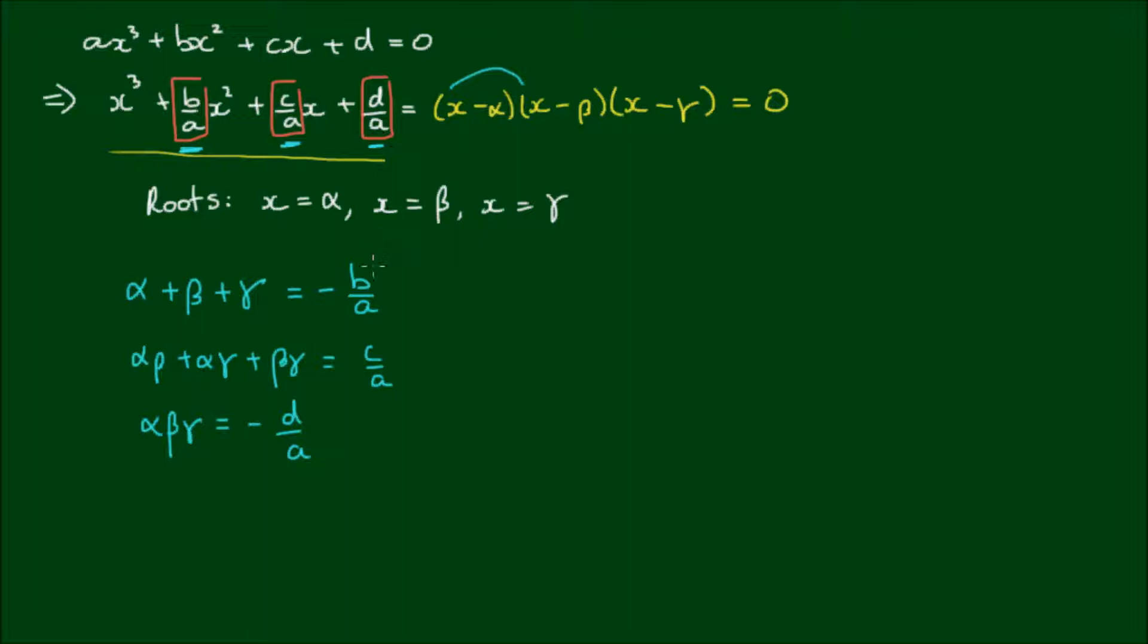And this middle one, sometimes we write shorthand as the sum of αβ. Or I like to say the sum of the products of paired combinations of the roots. I hope that wasn't too confusing.